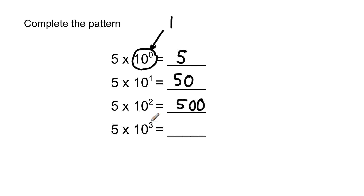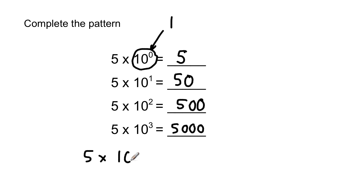How many zeros do you think are going to be on this number? There are two zeros plus the five — or you can say 10 to the second power is 100, and 5 times 100 is 500. We already know that 10 to the third power is 1,000, so 5 times 1,000 is 5,000. But you can also look at the exponent and know that means we're going to write three zeros on the end. What about 5 times 10 to the seventeenth power? How many zeros on the end of the five? Pretty easy — five with seventeen zeros.